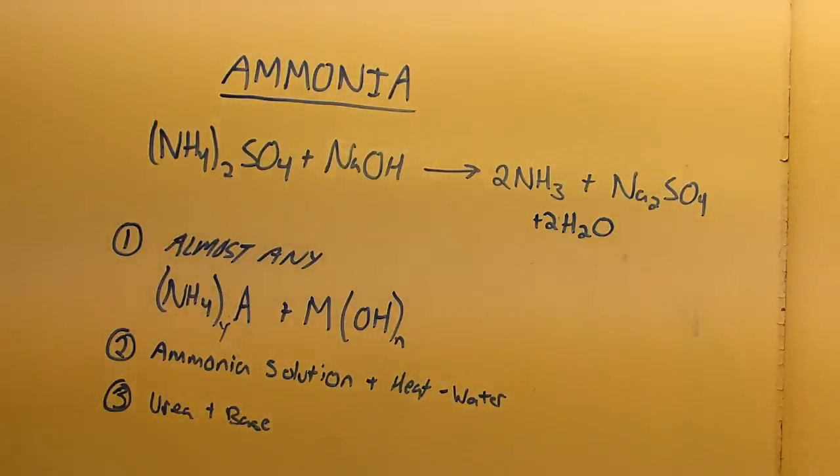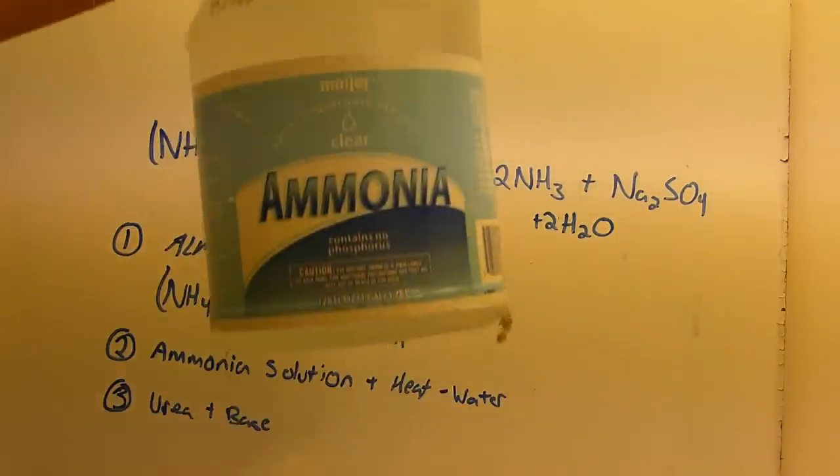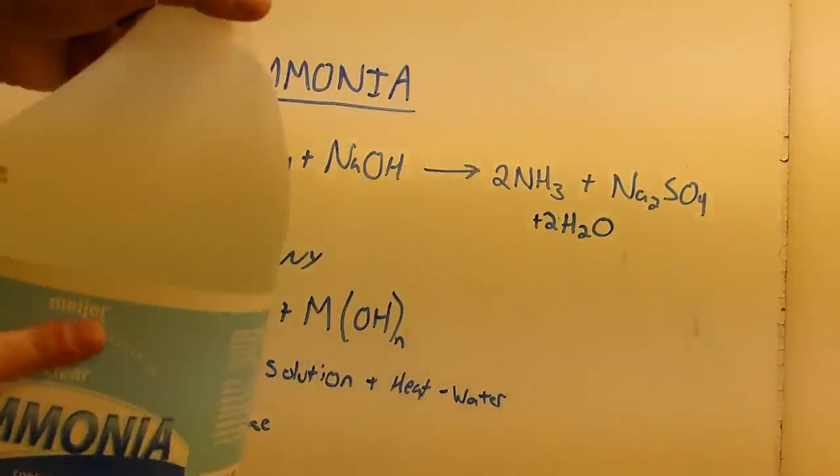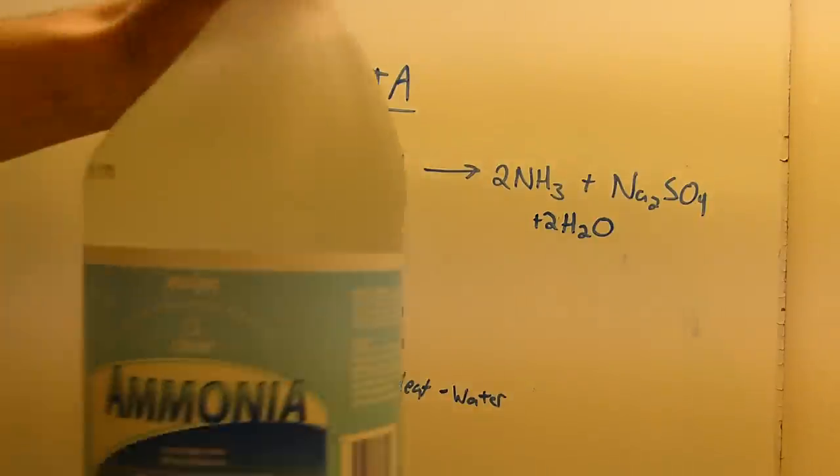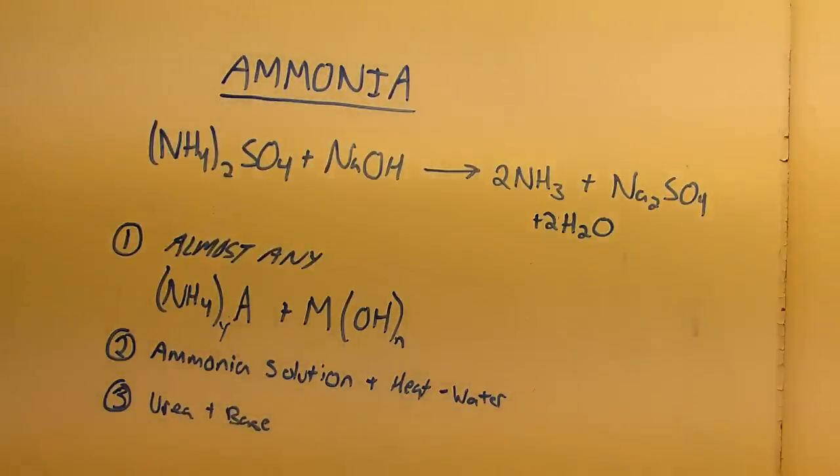Number two is boiling a solution of aqueous ammonia, and this is actually a really nice method. Unfortunately, though, you need a lot of really big glassware to do it. You can buy gallons of ammonia at local stores, and those solutions are somewhere between 6% and 10% usually, and by boiling that solution, you can force the ammonia out of it.